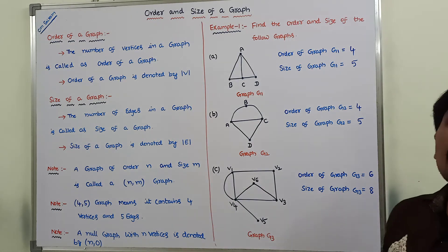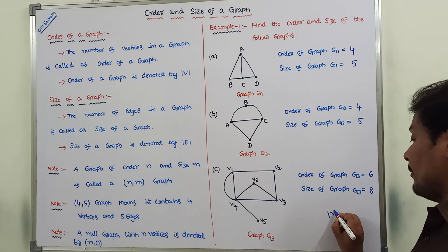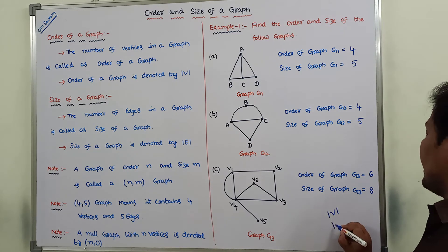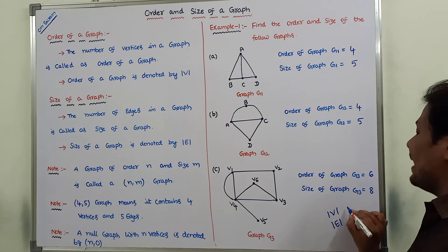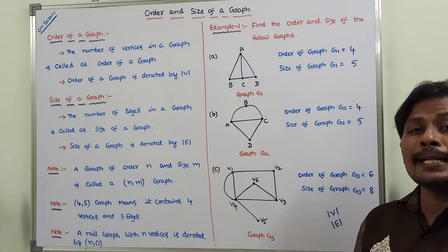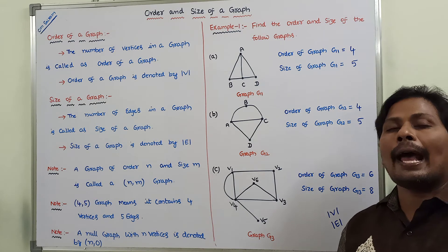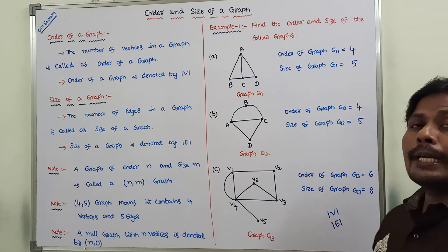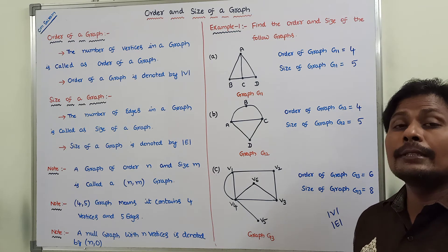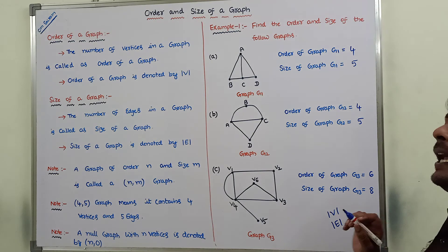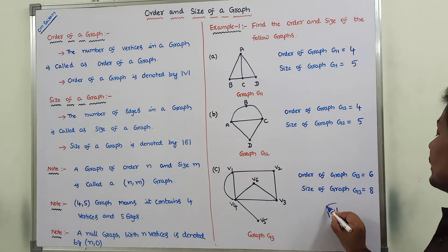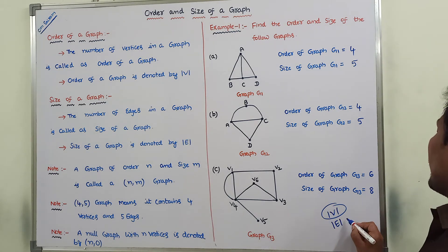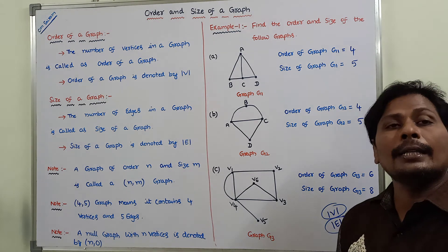Order of a given graph is denoted by |V|. Size of a given graph is denoted by |E|. |V| means number of vertices in a given graph, that is called as order of a given graph. |E| means number of edges present in a graph, that means size of a given graph.